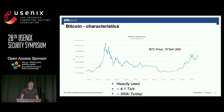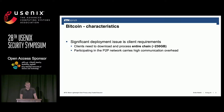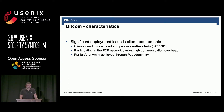It is heavily used with more than 360,000 transactions per day, with some overall okay throughput and latency while considering the technical limitations. One of the main characteristics of Bitcoin is that it has significant deployment issues around client requirements. If you really want to have a Bitcoin full node, you need to download and process the entire chain, which accounts to around 230 gigabytes right now, and participating in the peer-to-peer network also carries high communication overhead.